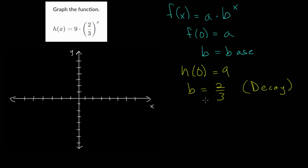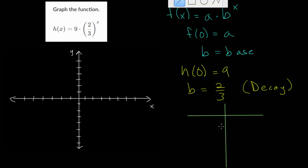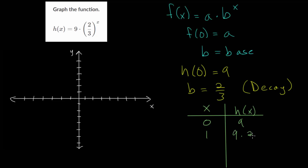Let's make a quick table and plot a couple of points to get an idea of what the graph looks like. When x = 0, h(x) = 9. When x = 1, we have 9 times 2/3. Two-thirds of 9 is 6: 9 divided by 3 is 3, and 3 times 2 is 6. We can keep going.